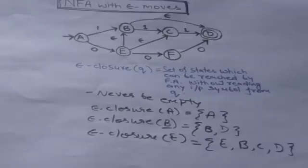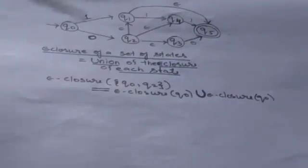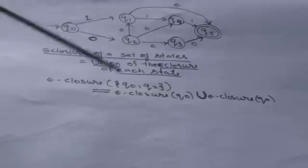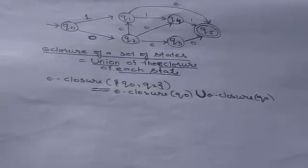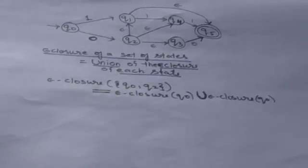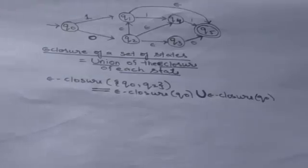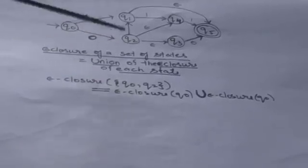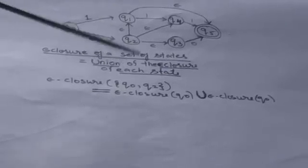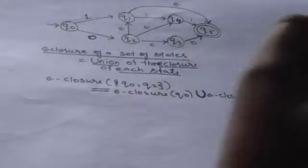The procedure is: first include the state itself, then find its empty transitions, and whatever next states we get, find their empty transitions as well. The second important thing: the empty closure of a set of states is the union of the empty closures of each individual state. For example, to find the empty closure of the set {Q0, Q2}, find the empty closure of Q0 and the empty closure of Q2 separately, then take their union.